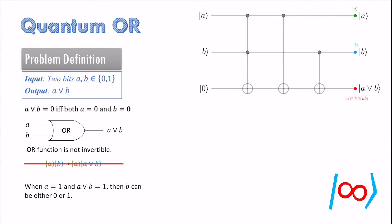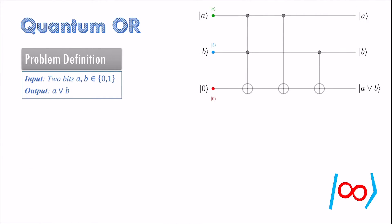But there is a workaround. We can use an additional qubit to store the output and keep the input intact. We can write our function as follows where O plus is addition mod 2.